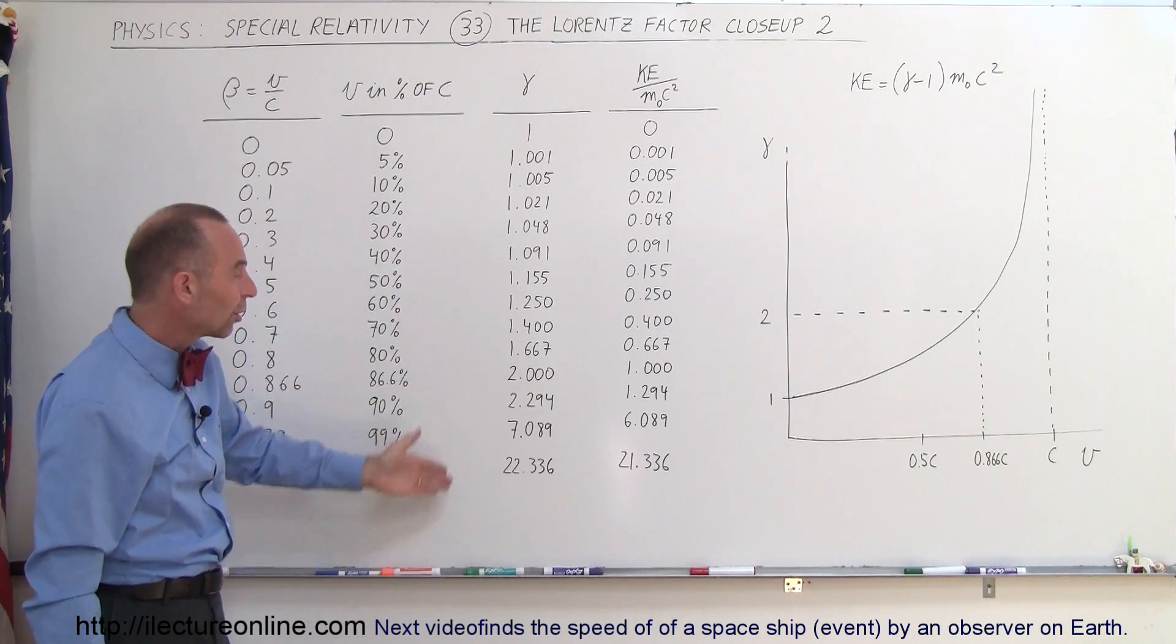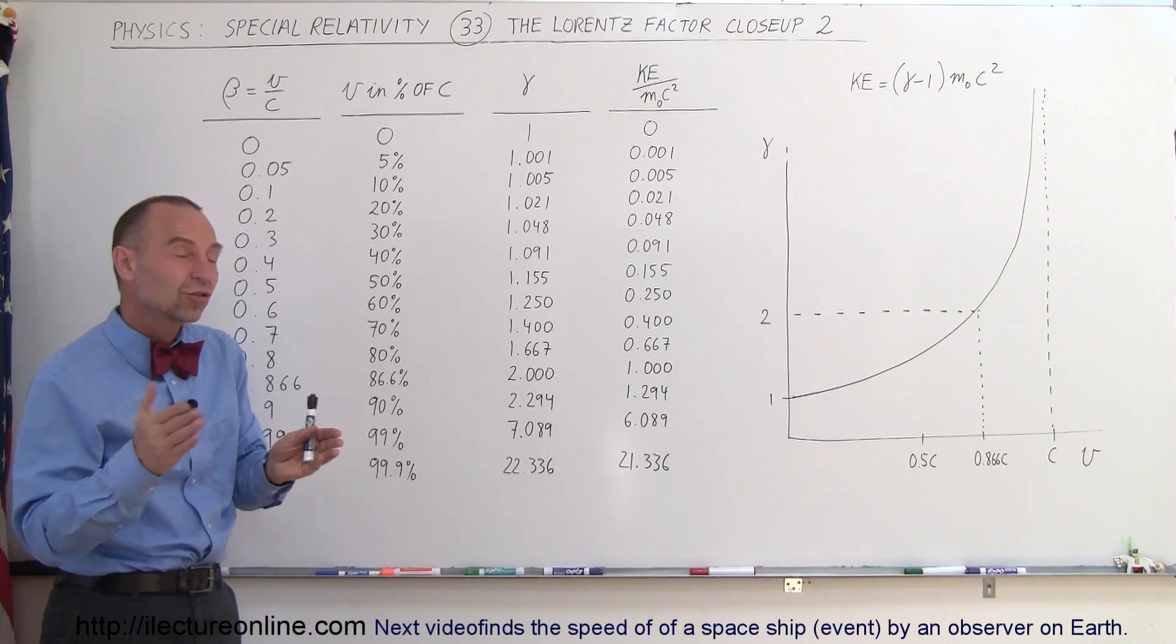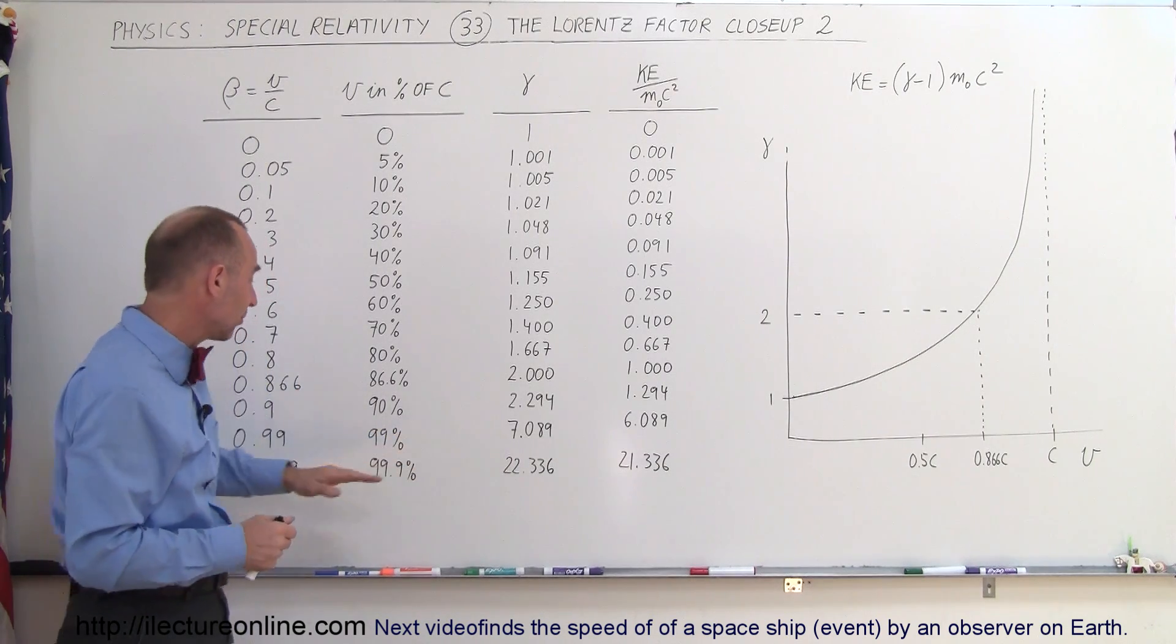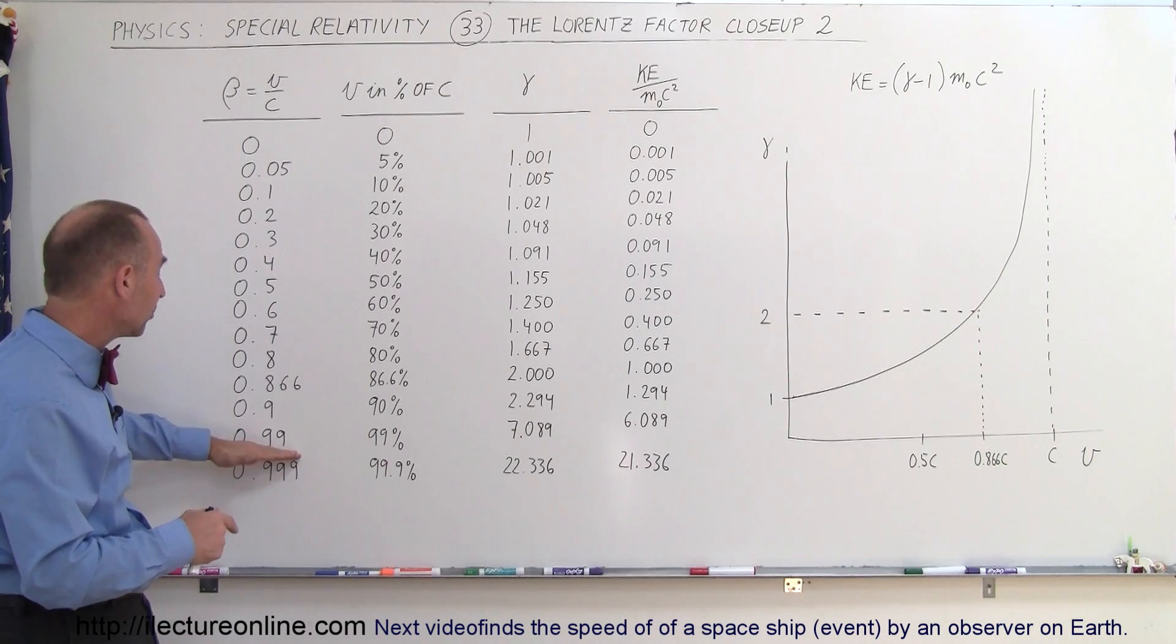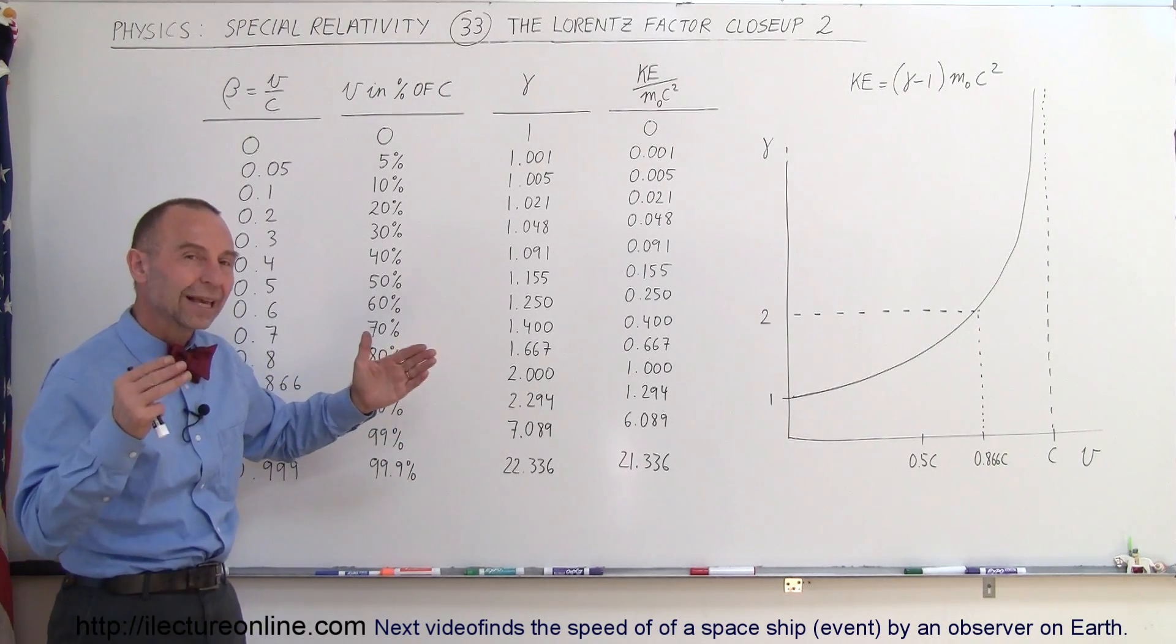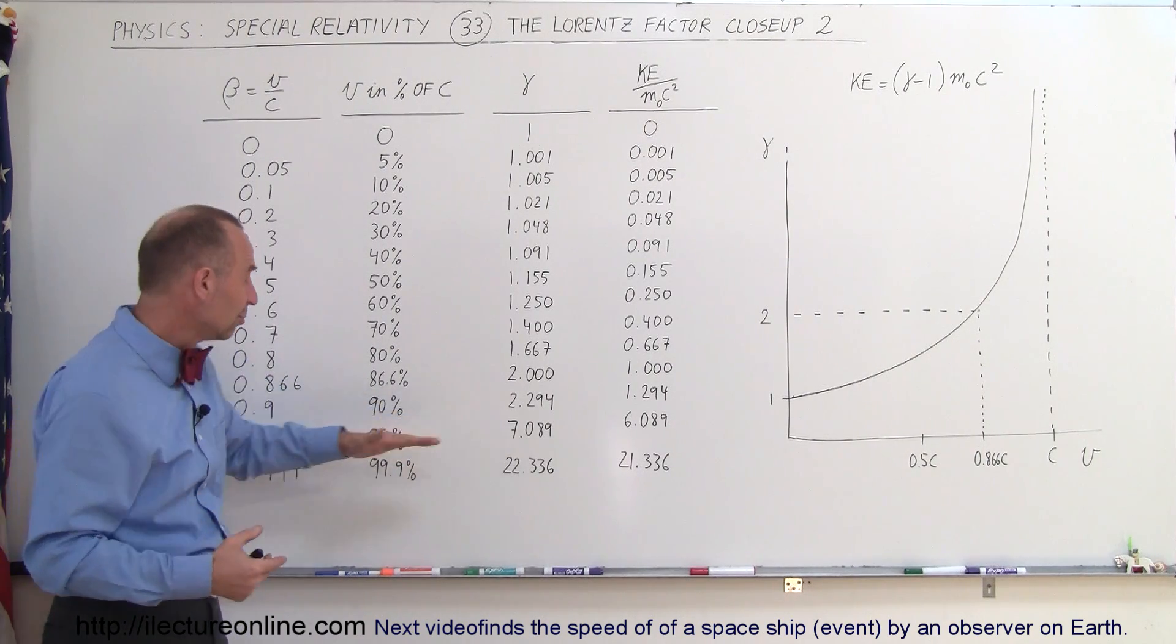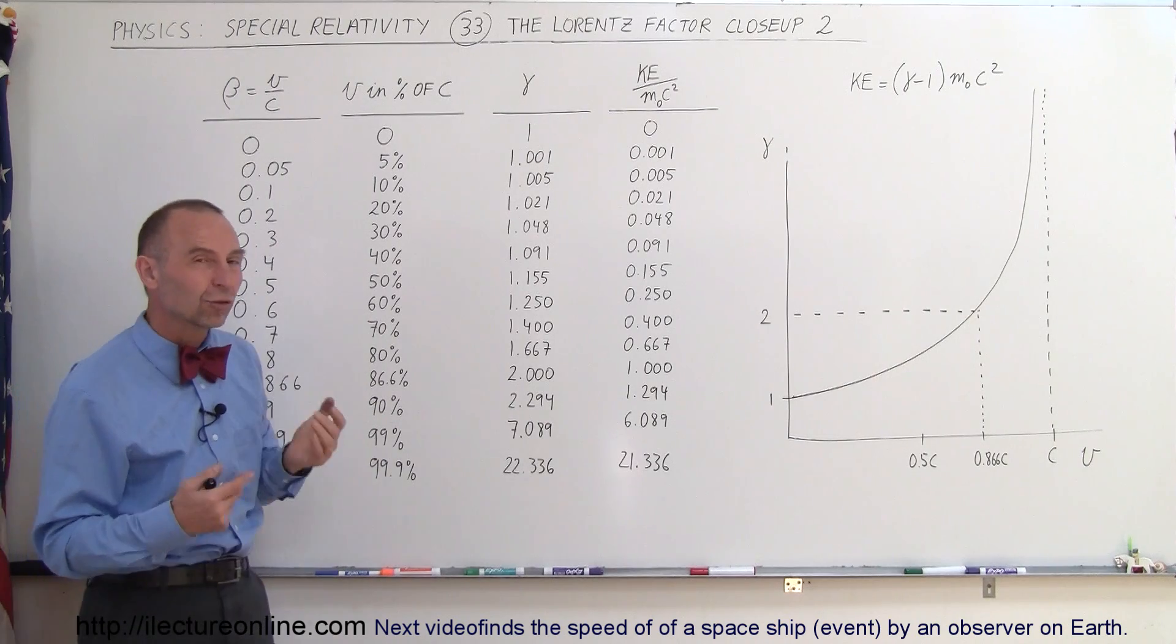This Lorentz Factor is good to look at various things. We can also estimate how much things shrink by. For example, if a spaceship comes by us at 99% of the speed of light, it will have shrunk to one-seventh of its normal length in the direction of travel. A person will have gained seven times as much mass moving at 99% of the speed of light.